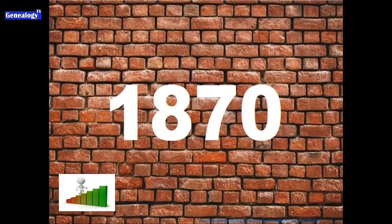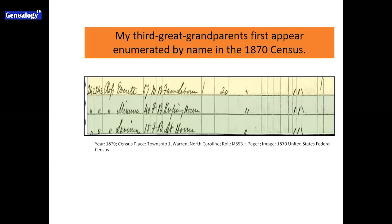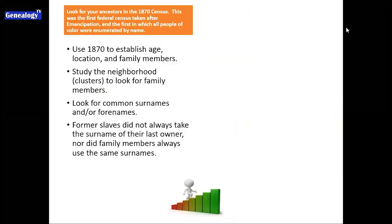We're going to talk about what to do once you've walked back and gotten to 1870. This is a snippet of a census record showing my third great-grandparents, one set of them in Warren County, North Carolina, in the 1870 census — the first time they appear in any census records. You want to look for your ancestors in the 1870 census because this was the first federal census taken after emancipation. It's the first time that all people, including all people of color, are going to be enumerated by name in a federal census.